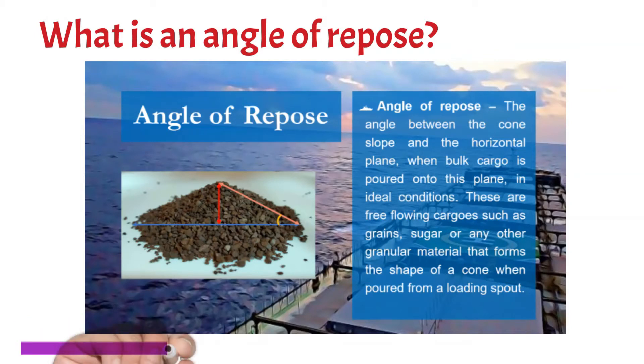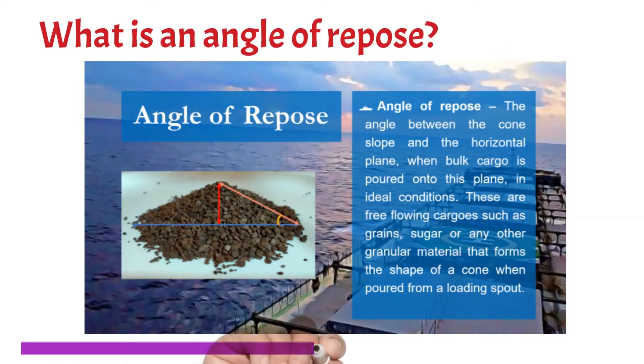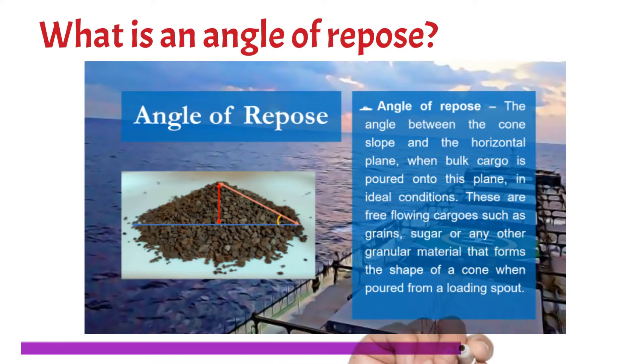These are free-flowing cargoes such as grains, sugar, or any other granular material that forms the shape of a cone when poured from a loading spout.